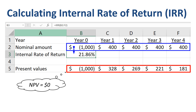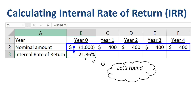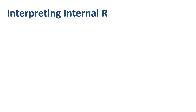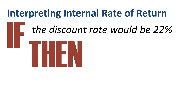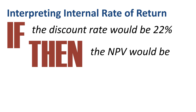Let's round the IRR to 22% to keep the rest of our discussion simple. So what does 22% mean? How do we interpret this internal rate of return? You can think of IRR as an if-then thought experiment: if the discount rate would be 22%, then the NPV of the project would be zero.